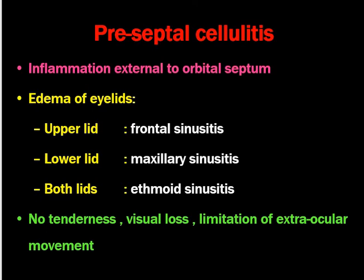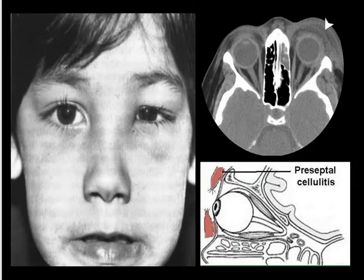Preseptal cellulitis is inflammation external to the orbital septum. The patient presents with edema of the eyelids — upper, lower, or both — depending on which sinus is inflamed. There is no tenderness, no visual loss, and no limitation of extraocular movement. On clinical examination you will see swelling of the upper and lower eyelids medially, basically due to ethmoid sinusitis. On CT scan you can see edema in the preseptal area; the orbital septum is the dividing landmark.